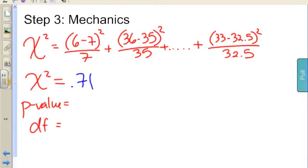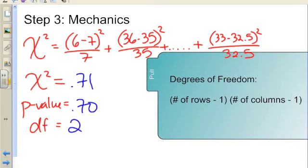So I had 0.71, 0.70, and degrees of freedom 2. Just a quick reminder, degrees of freedom comes from the number of rows minus 1, number of columns minus 1. Mr. Curtis, did you do those backwards? In other words, it really doesn't matter. You can multiply in any order. So that's 1 times 2, which is how we got the 2.